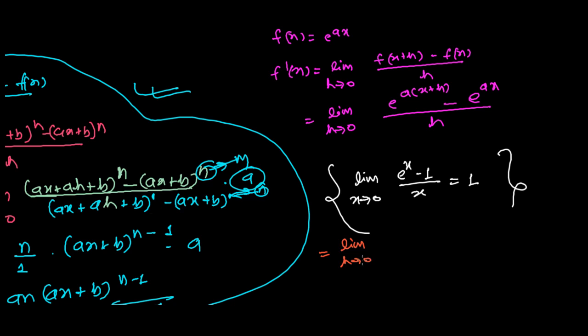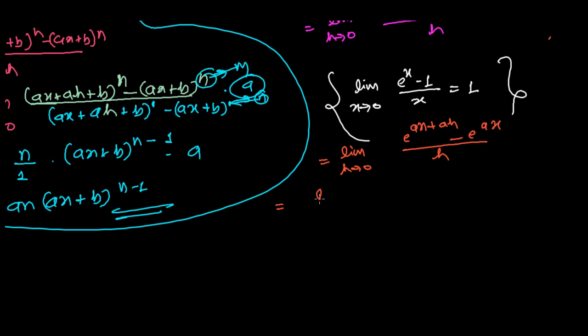Further, what I'm going to do is: lim(h→0) [e^(ax) · e^(ah) - e^(ax)]/h. From the previous step, we got this step. You might get confused about this transformation.